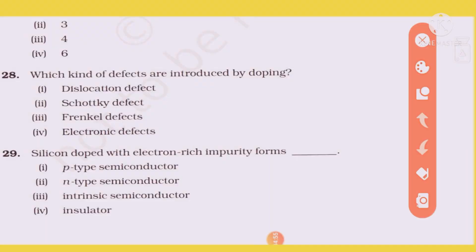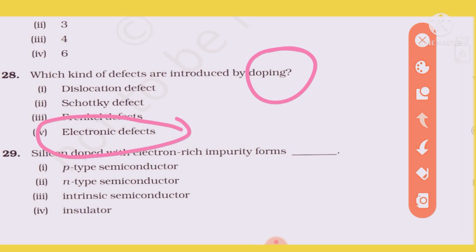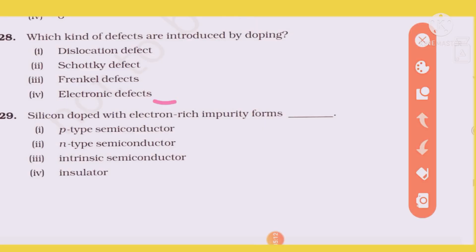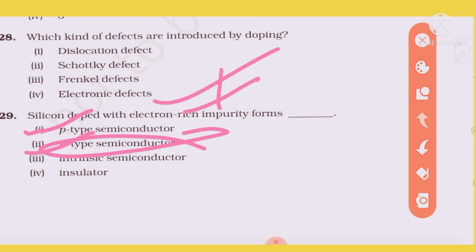What kind of defect is introduced by doping? Doping to create p-type or n-type semiconductors introduces electronic defects. When silicon is doped with an electron-rich impurity, it creates n-type; doping with electron-poor impurity creates p-type semiconductor.